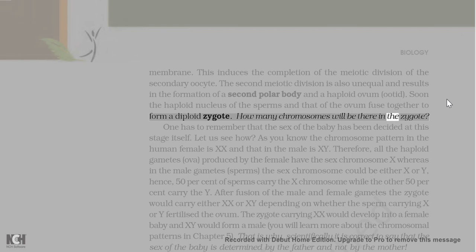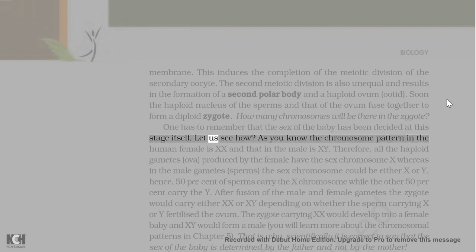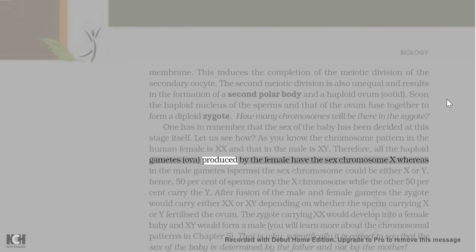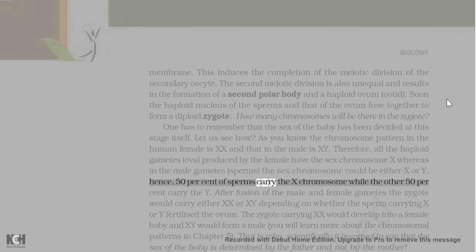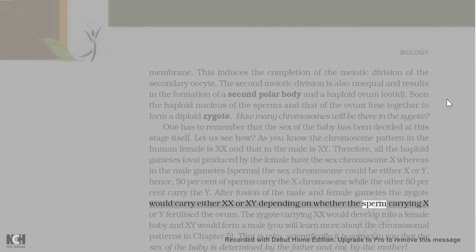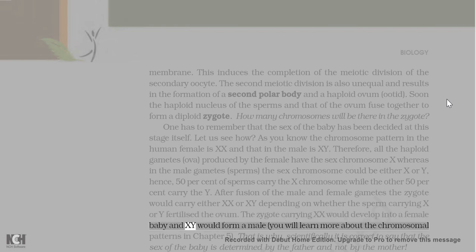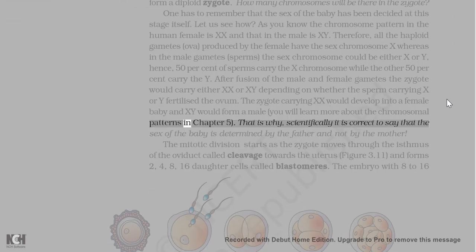The sex of the baby is determined at the stage of fertilization. The chromosome pattern in the human female is XX and that in the male is XY. Therefore, all the haploid gametes (ova) produced by the female have the sex chromosome X, whereas in the male gametes (sperms), the sex chromosome could be either X or Y. Hence, 50% of sperms carry the X chromosome while the other 50% carry the Y. After fusion of the male and female gametes, the zygote would carry either XX or XY depending on whether the sperm carrying X or Y fertilizes the ovum. The zygote carrying XX would develop into a female baby and XY would form a male.